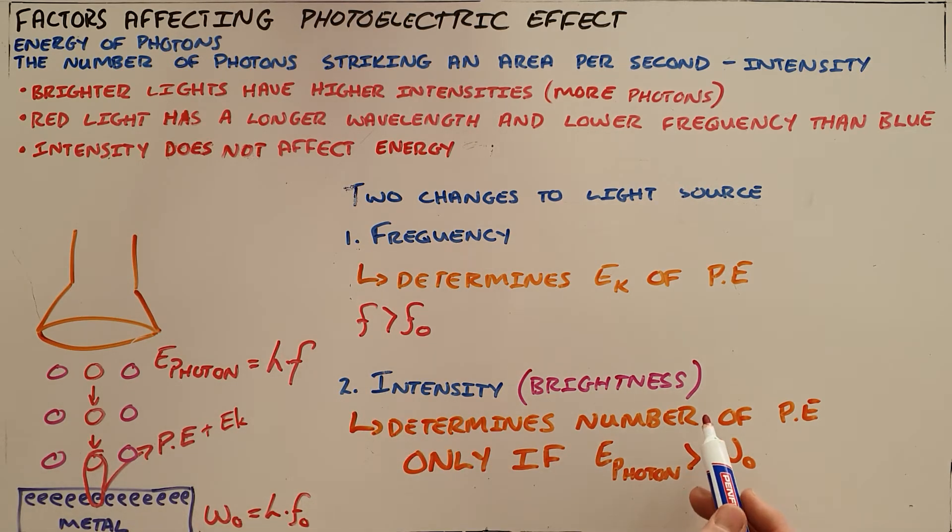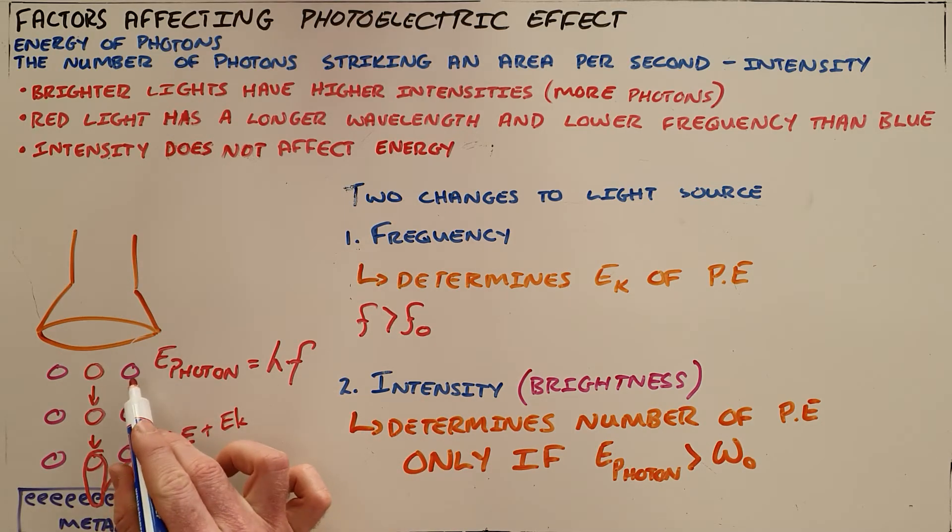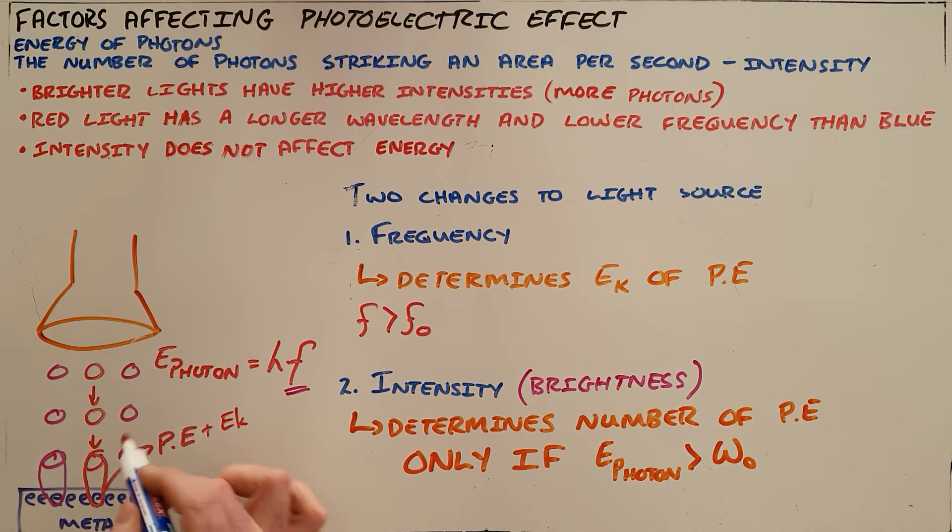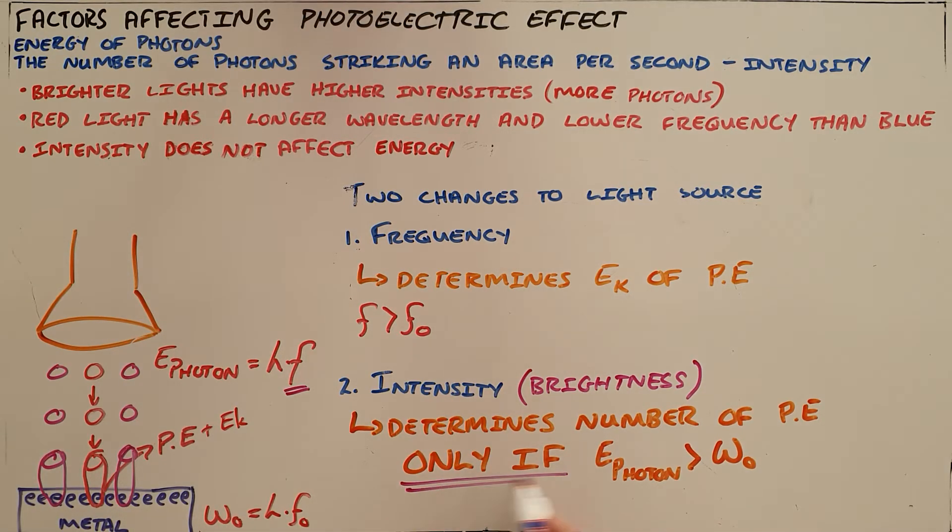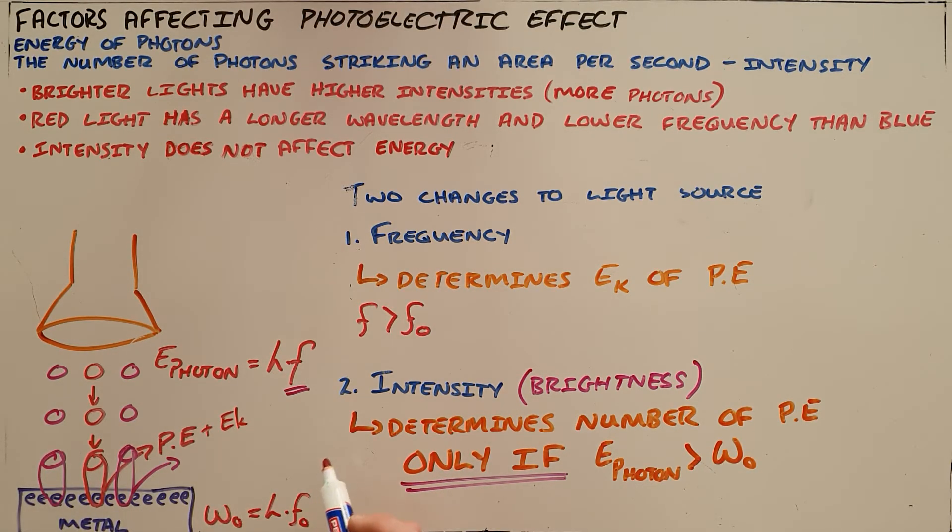So now what we can see here is that this has not changed the energy of an individual photon. The energy of a photon is only ever related to the frequency of that light source. What we have changed though is the number of photons that are striking a surface, which means we have changed the number of photons that can be absorbed by electrons. And if the energy of that photon exceeds the work function, what that does is it increases the number of photoelectrons, because there are more photons striking the surface per second, there are now going to be more photoelectrons leaving the surface.